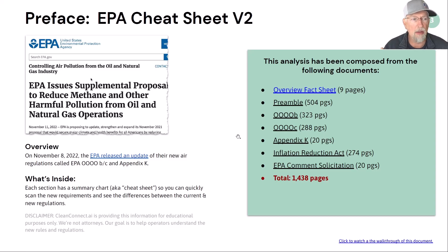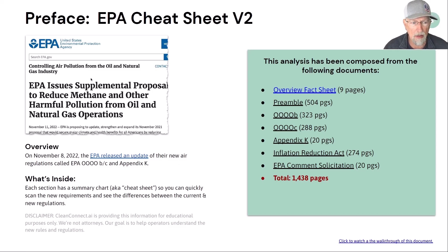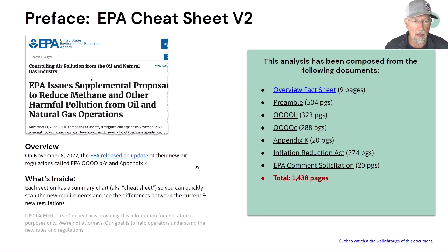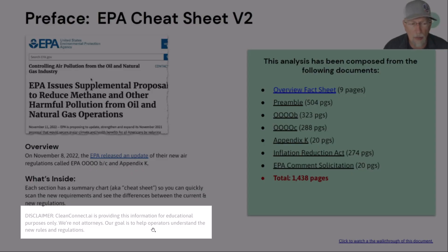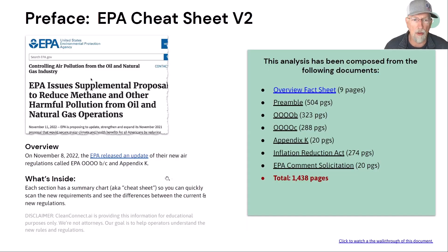On November 8, 2022, the EPA released an update to their proposed Quad OBC and Appendix K. The cheat sheet basically summarizes 1,438 pages into this 16-page document. I have a disclaimer here saying that it's for educational purposes only — I'm not an attorney. My goal is to help operators and environmental consultants understand what's in the new regs.